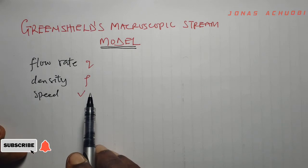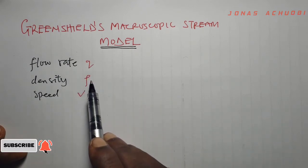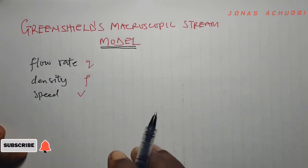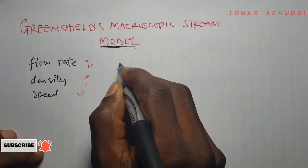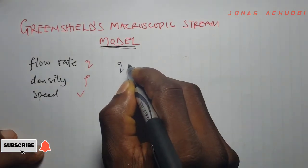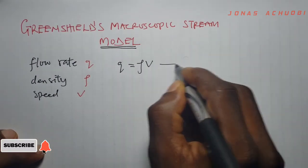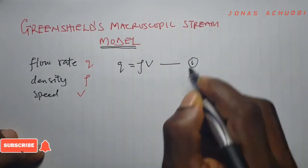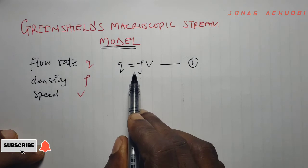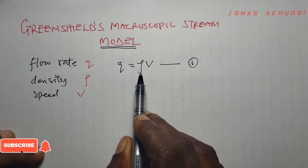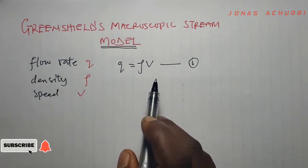These parameters — flow rate, density, and speed — have the relationship Q = ρV, meaning the flow rate equals the product of density and speed. We call this equation 1.